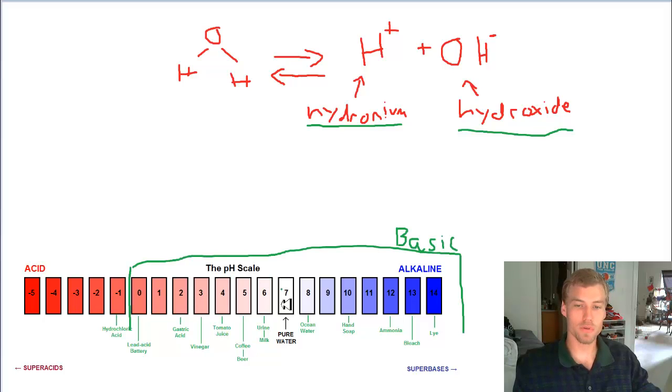7 would be pure water. That's completely neutral. And that is, you've got this interaction, but you've got for every hydronium, you've got one hydroxide. So overall, they balance each other out.